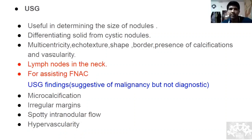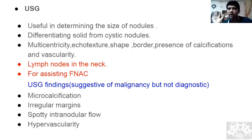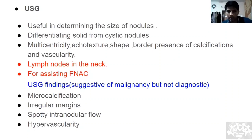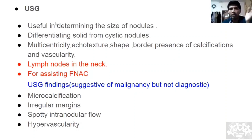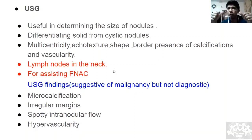Vascularity can be high in two scenarios: hyperthyroidism or cancer. To differentiate: thyroid cancers are invariably euthyroid — TFT will be normal. If on ultrasound there is high vascularity and TFT is elevated, the patient has hyperthyroidism (Graves, toxic multinodular goiter, or toxic adenoma). If vascularity is raised but TFT is normal or hypothyroid, keep a diagnosis of cancer in mind. Ultrasound also assesses lymph nodes in the neck and assists FNAC guidance.